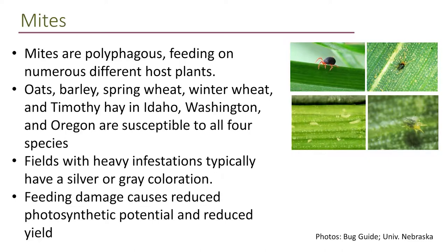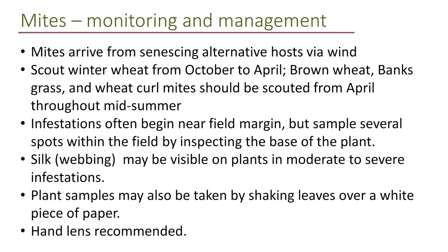About mite biology: the mites feed on numerous different hosts, including many grasses in Washington, Oregon, and Idaho. Fields with heavy infestations can have a silver or gray coloration with associated yield losses. The mites arrive from senescing alternative hosts on wind, so you should be scouting from October to April. Brown wheat and banks grass mites should be scouted later as their infestations can grow later. Infestations often begin near the field margin, but sample about the field to make sure. You can sometimes see silk or webbing before you see the mites. Take samples by shaking leaves over a white piece of paper; a hand lens is recommended.